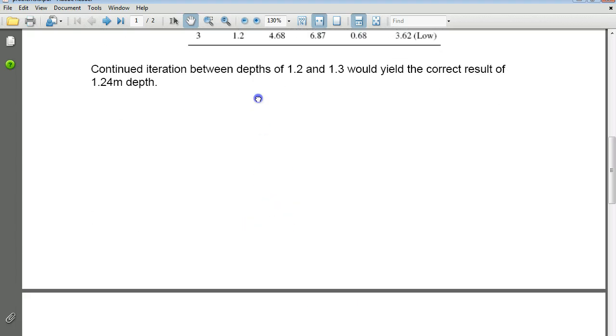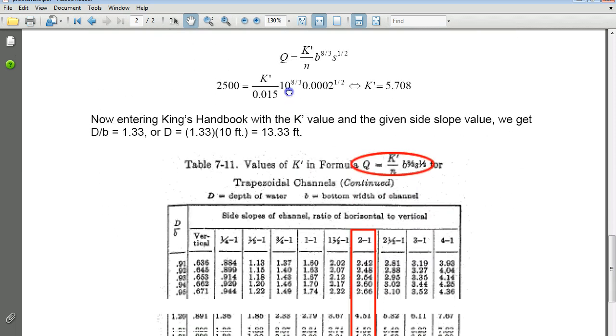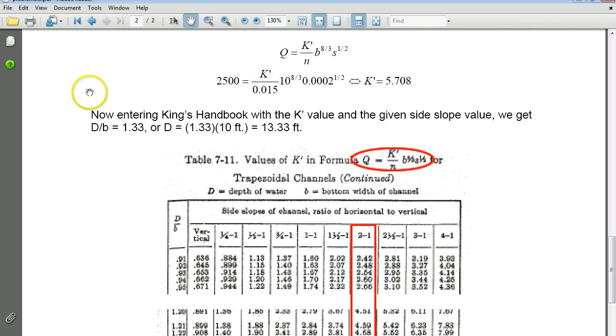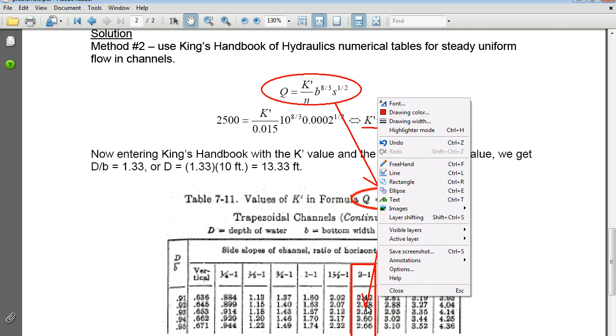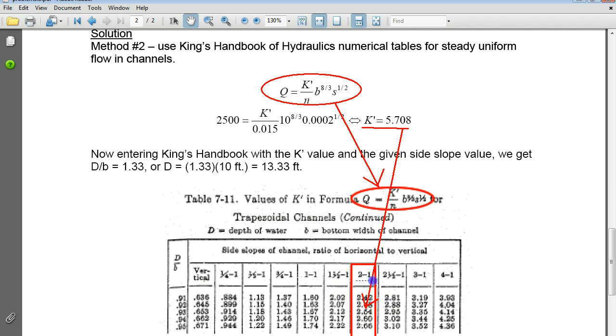But if we try a different method, same kind of problem, just different numerical values, and instead I consult the King's Handbook of Hydraulics tables, I can compute this and look at the number of steps I have here. I can compute this very quickly and definitively. I shopped for my form of King's equation which I found on the tables. I then solved for K. I then entered the body of the table, taking into account the fact that I had 2 to 1 side slopes given to me. And what I'm after is to figure out what the D over B ratio is, because I'm given B, bottom width, and I can then solve for depth. So it's very quick, very nice.